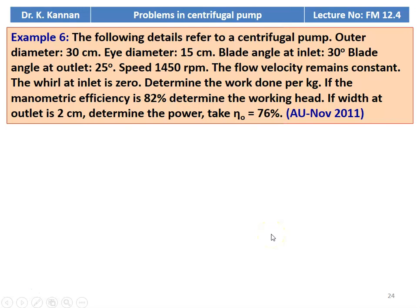Example number 6 from the November 2011 question paper. The following details refer to a centrifugal pump: the outer diameter is 30 centimeter, inner diameter is 15 centimeter, blade angle at the inlet is 30 degree, blade angle at the outlet is 25 degree, speed is 1440 RPM, and the flow velocity remains constant. The whirl velocity at the inlet is 0. Determine the work done per kg. If the manometric efficiency is 82 percent, determine the manometric head. If the width at the outlet is 2 centimeter, determine the power; take overall efficiency as 76 percent.